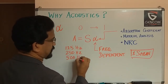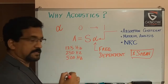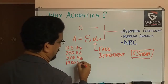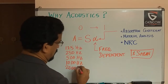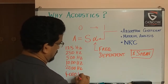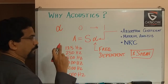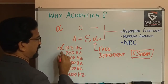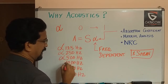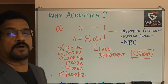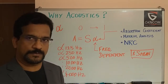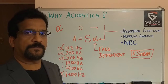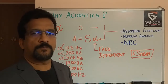Because alpha is frequency dependent, it is typically calculated at octave bands: 125 Hz, 250 Hz, 500 Hz, 1000 Hz, 2000 Hz, and 4000 Hz. We covered octaves in a previous part of this video series, so refer back to that if needed. Alpha at 125 Hz, at 250 Hz, at 500 Hz, and so on up to 4 kHz all have different values, and depending on the application, the appropriate alpha value must be considered.